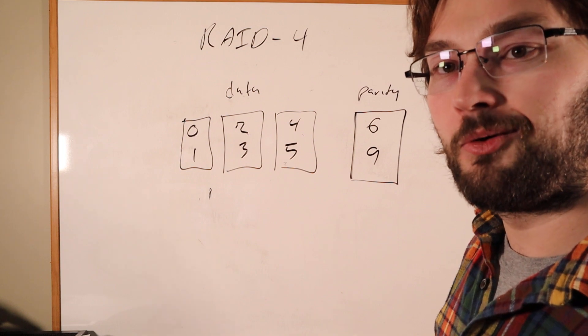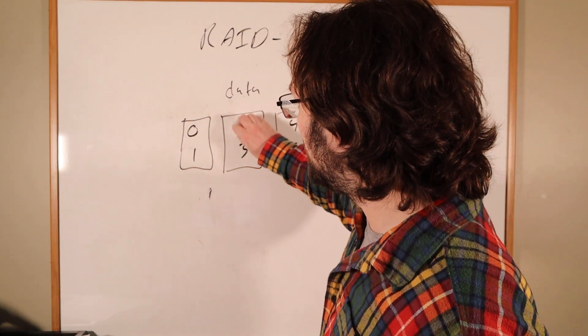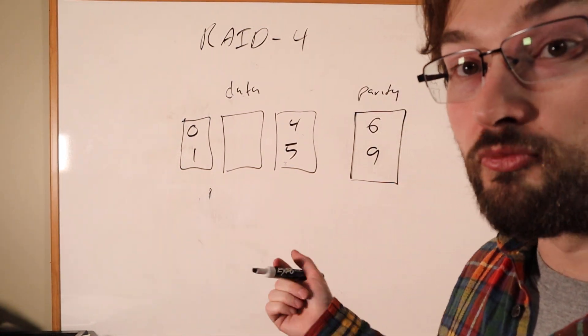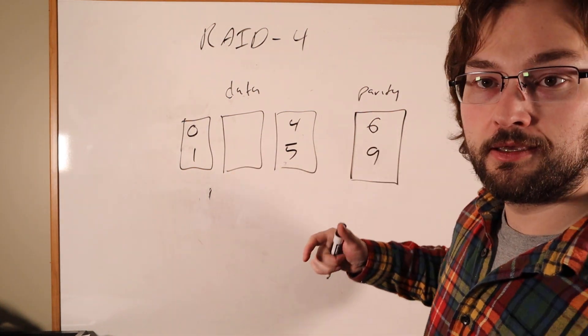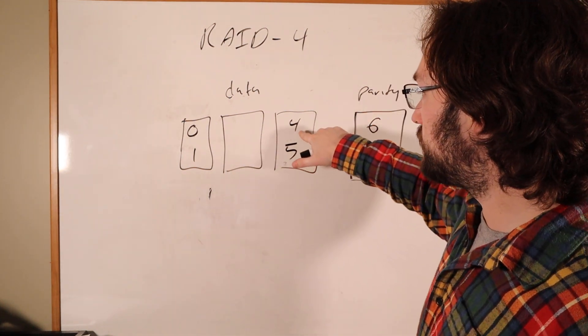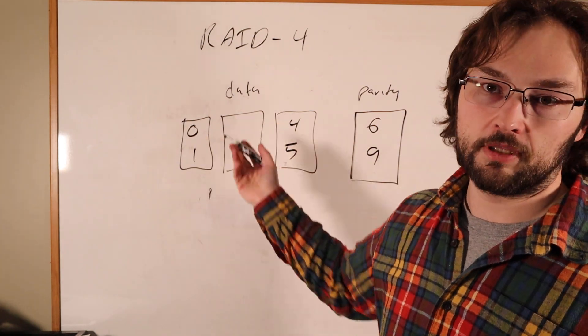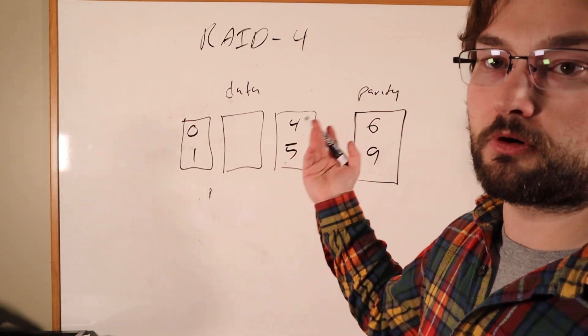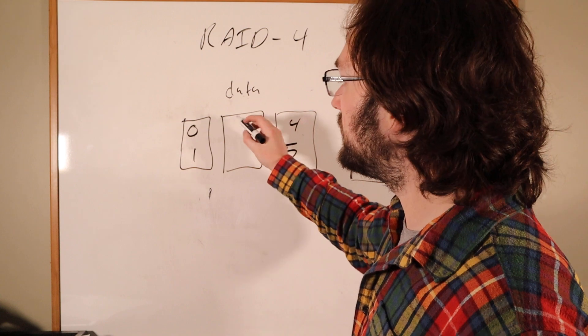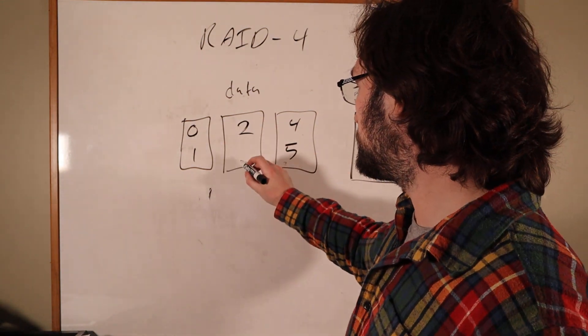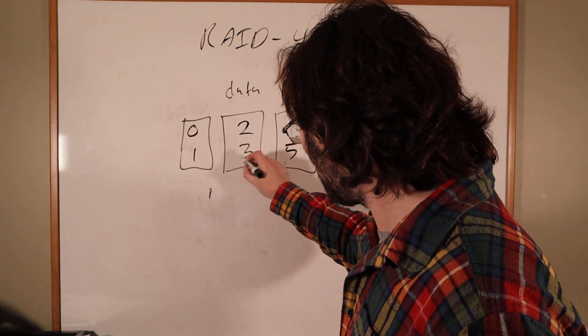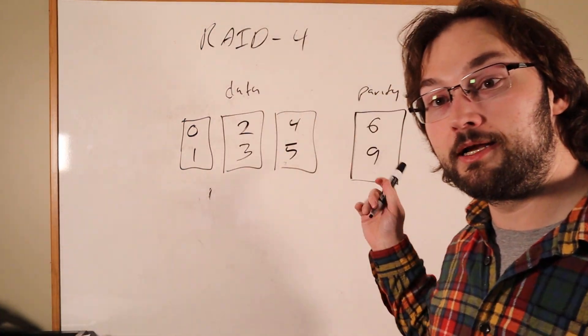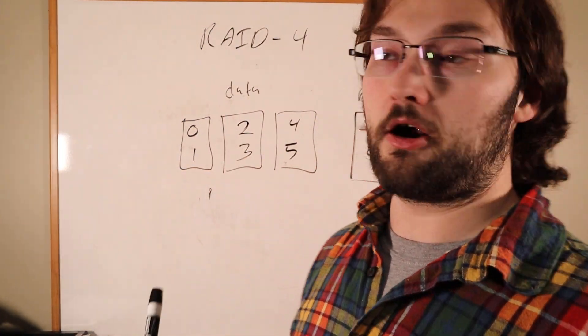But now, here's the trick. We're going to lose a disk. So disk 2 here goes bad, we lose all the data, we put in a new disk, and now we have to try to rebuild. And we can rebuild by looking at the other disks and the parity disk. So our parity is 6, we subtract 4 and 0, because if we're using addition as parity, we can use subtraction to reverse the parity. Normally you use XOR, which is a little bit more obvious. But 6 minus 4 minus 0 is 2. 9 minus 5 minus 1 is 3. And we've recovered our data, even though we lost a disk and didn't have any copies of it. We have the parity disk, and we have the other disks in our RAID.